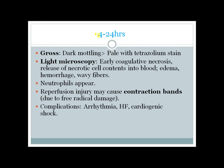In the 4 to 24-hour period, gross and macroscopic changes appear. Gross changes include dark mottling, which becomes pale with tetrazolium stain. Microscopy begins to show early features of coagulative necrosis; necrotic cells release contents into the blood. There is edema due to inflammatory infiltration, hemorrhage, and wavy fiber changes; neutrophils start to appear and increase. If reperfusion therapy is given, it can cause reperfusion injury with contraction band formation due to free radical damage. Complications remain similar: arrhythmia, heart failure, and cardiogenic shock.